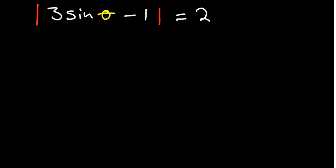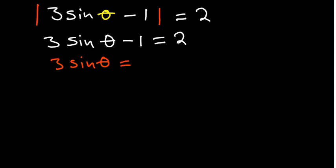So say three sine theta minus one, remove the absolute value, equal to two as it is, and then we can simplify. If you move the like terms, the one will go to the other side. Two plus one will give us three.